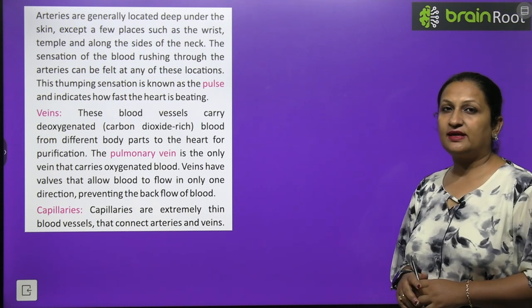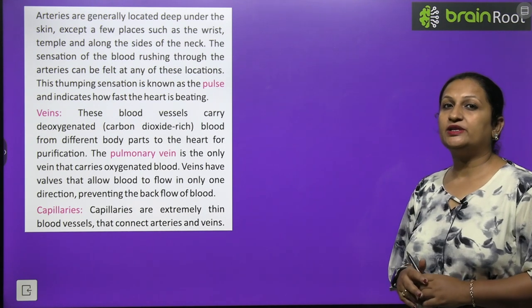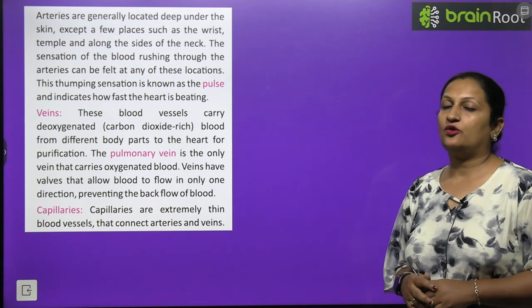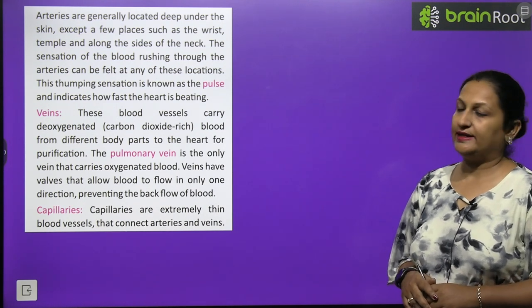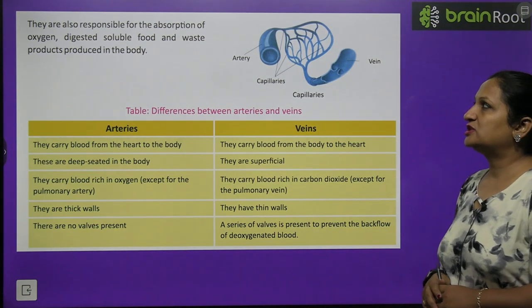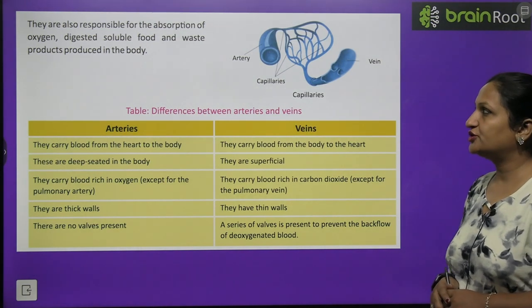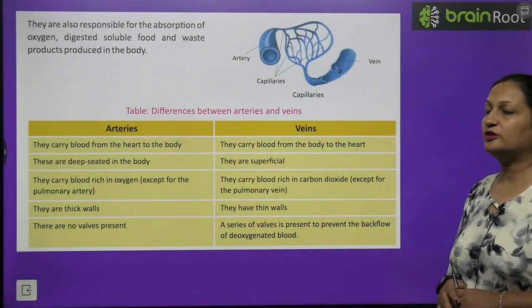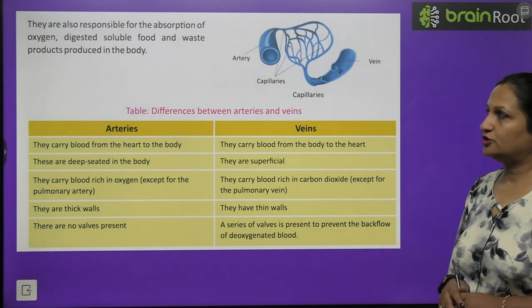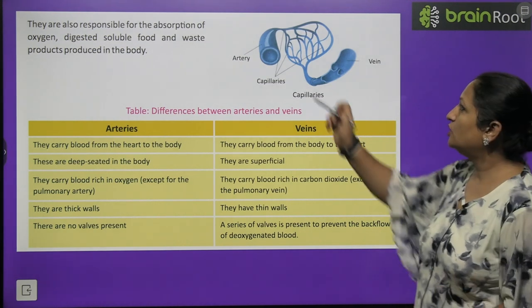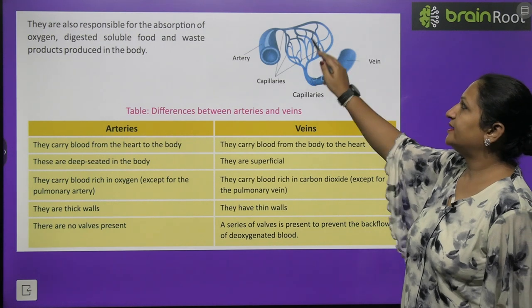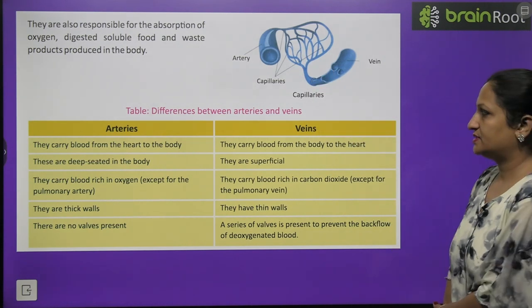Capillaries are extremely thin blood vessels that connect arteries and veins. They are also responsible for the absorption of oxygen, dissolved soluble food, and waste products produced in the body. You can see in the diagram: arteries on one side, veins on the other, and capillaries connecting them.